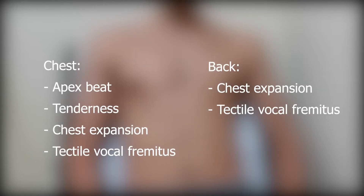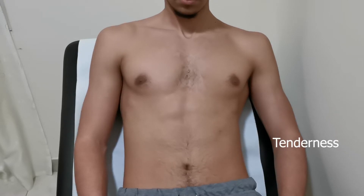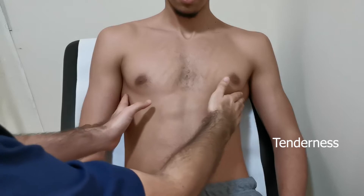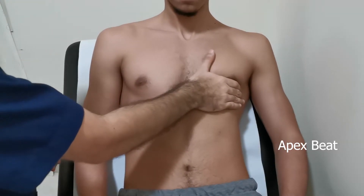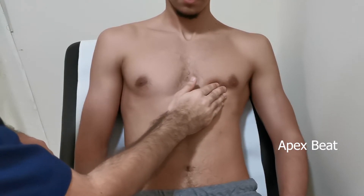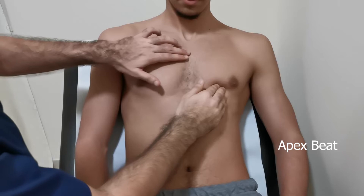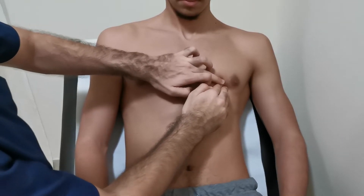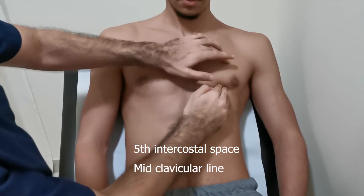Next is the palpation. We will palpate four things anteriorly and repeat two of them posteriorly. First, check for tenderness. Now locate the apex beat, then check the position — it is in the fifth intercostal space, midclavicular line.